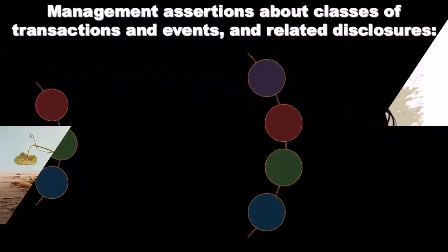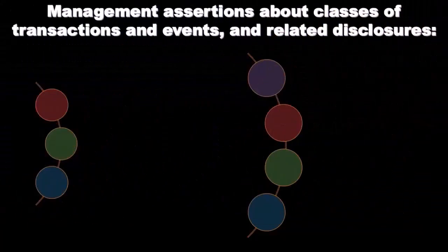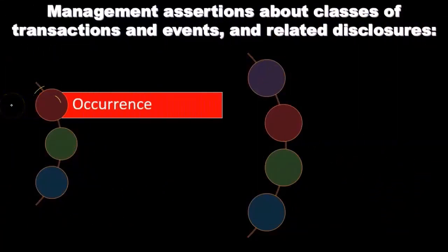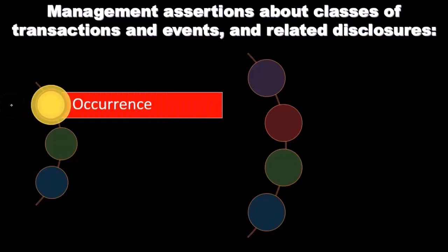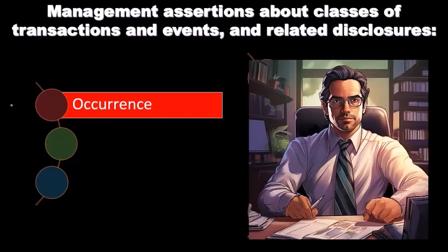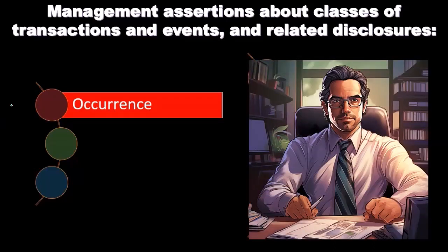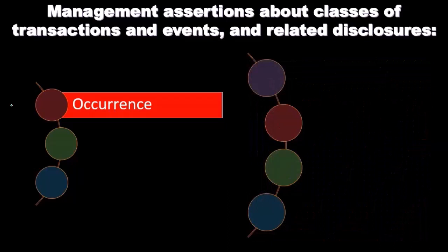So these are management assertions about classes of transactions and events and related disclosures. The first assertion is occurrence. Transactions and events that have been recorded or disclosed have occurred, and such transactions and events pertain to the entity.